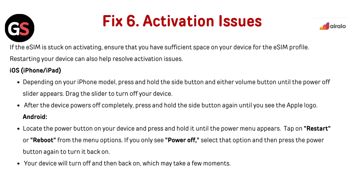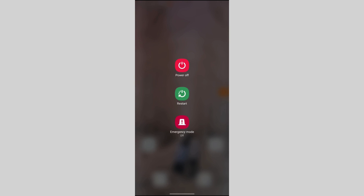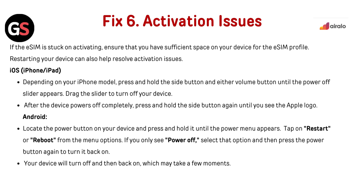Fix 5: Activation issues. If the eSIM is stuck on activating, ensure that you have sufficient space on your device for the eSIM profile. Restarting your device can also help resolve activation issues. For iPhone, iOS, and iPad: press and hold the side button and either volume button until the power off slider appears, drag the slider to turn off your device, then after the device powers off completely, press and hold the side button again until you see the Apple logo. For Android: press and hold the power button until the power menu appears, tap Restart or Reboot. If you only see Power Off, select that option and then press the power button again to turn it back on. Your device will turn off and then back on, which may take a few moments.